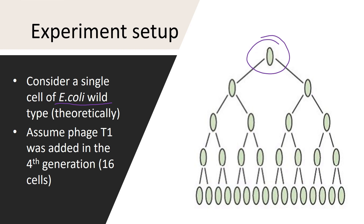In the first generation you will get two cells. These two cells will divide and in the second generation you will get four cells. In the third generation you will get eight cells, and finally in the fourth generation you will get 16 cells.